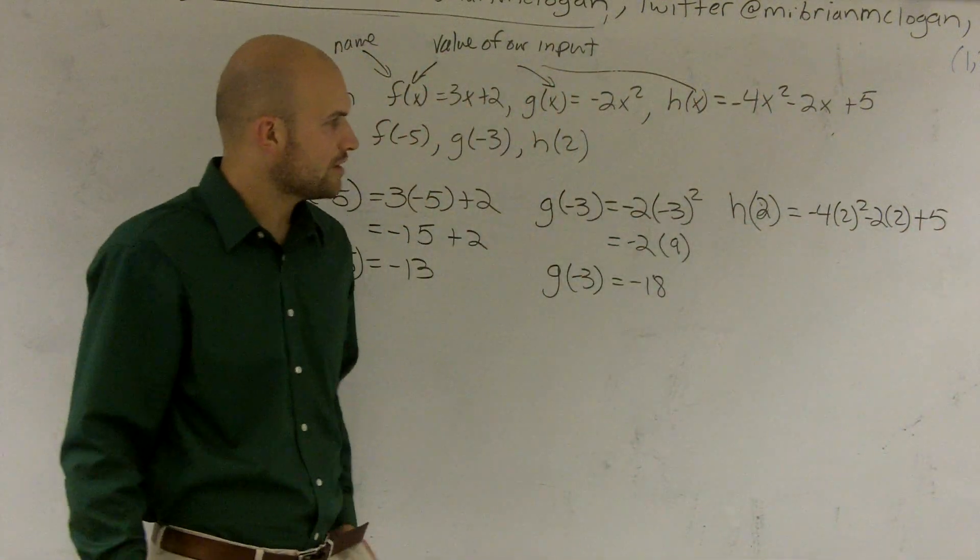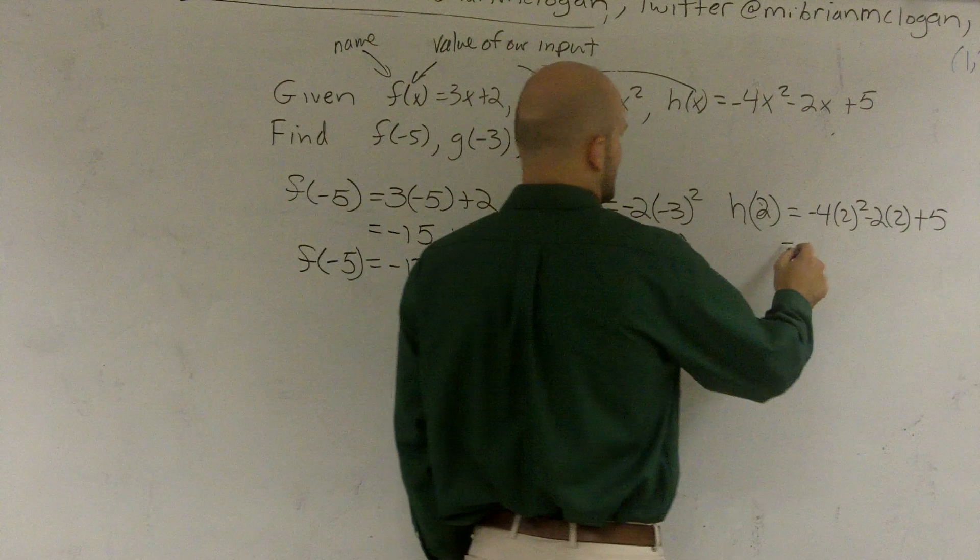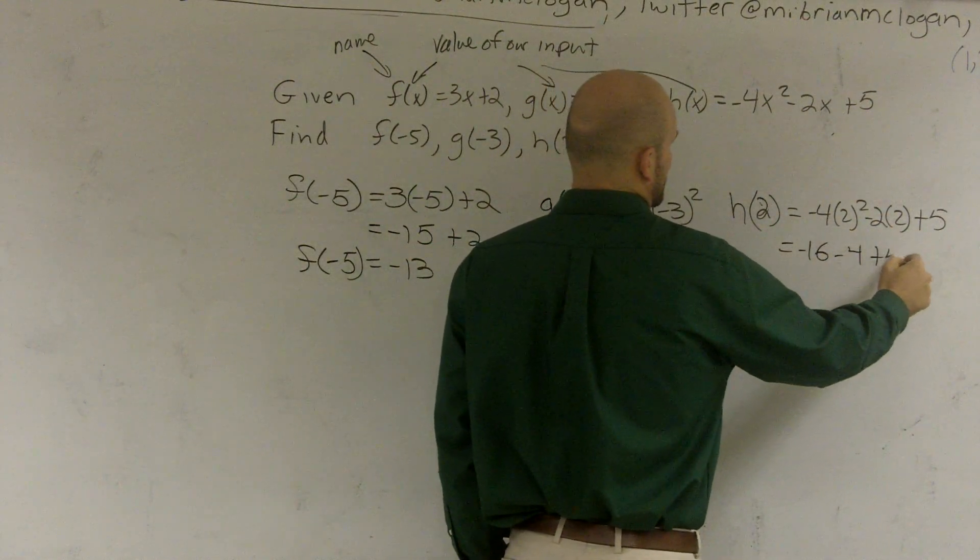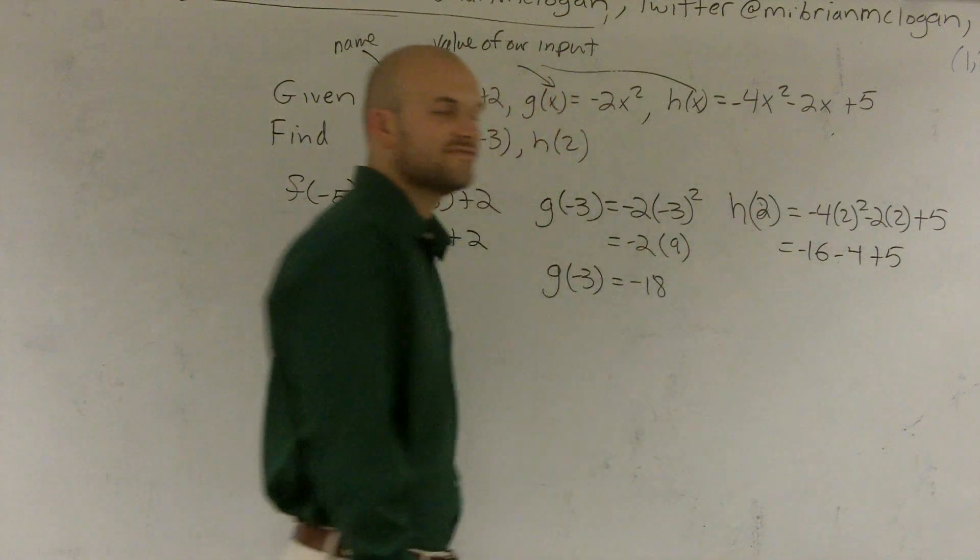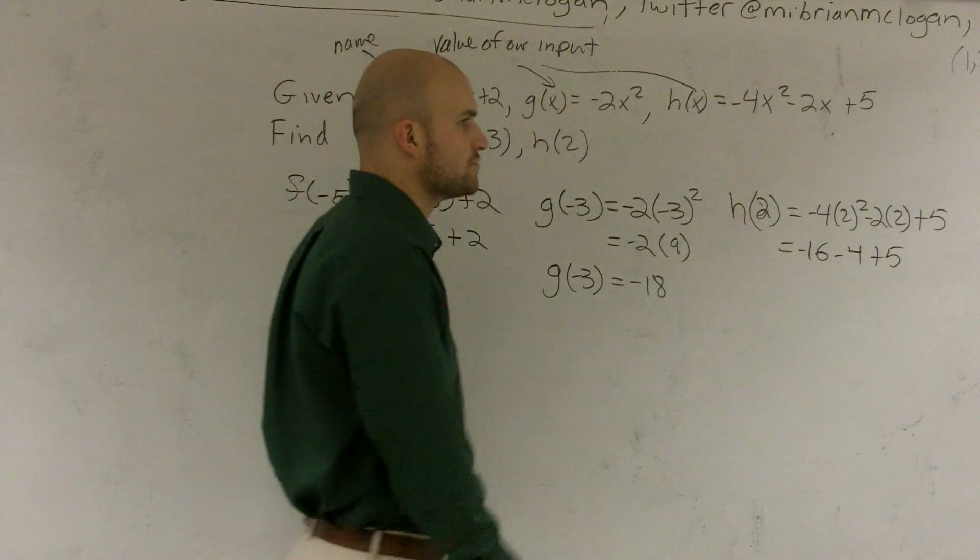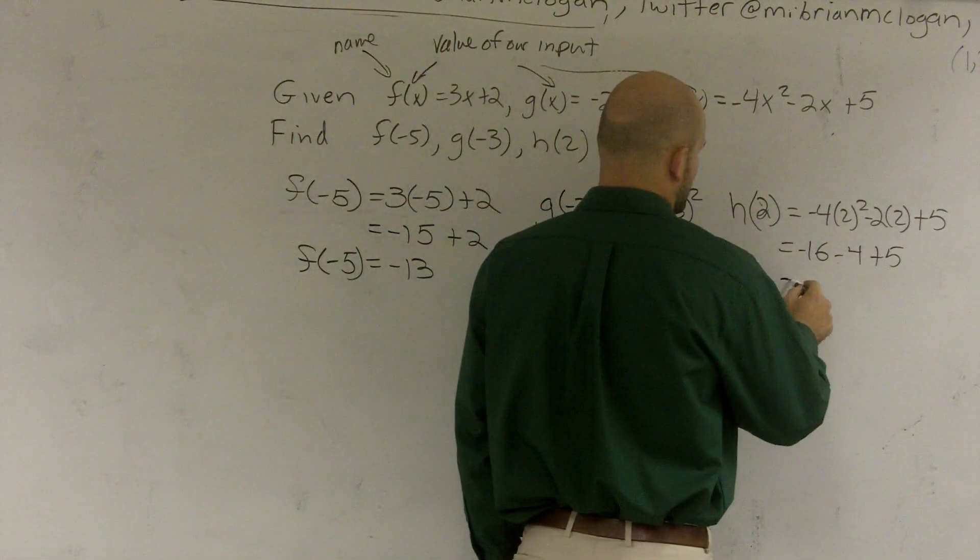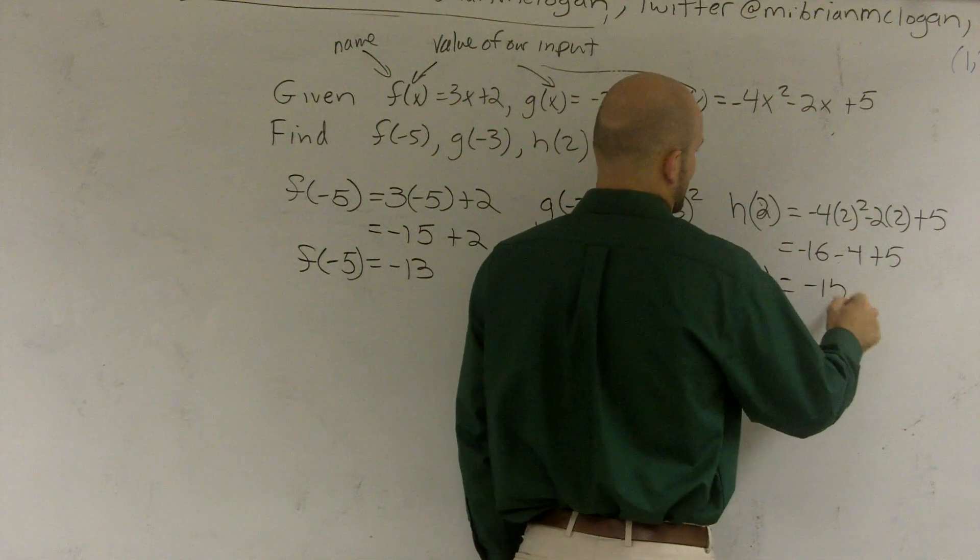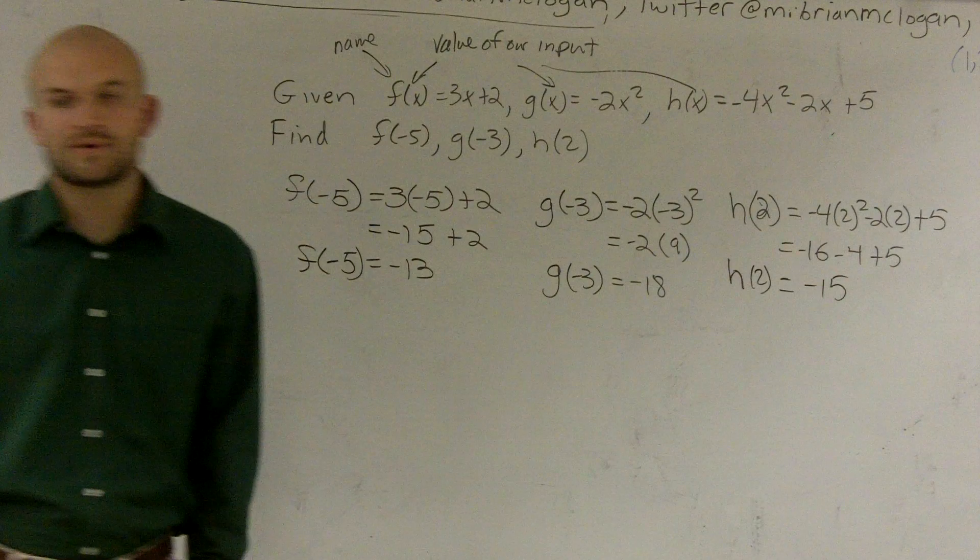Well, 2 squared is 4 times negative 4 is negative 16 minus 4 plus 5. Negative 16 minus 4 is negative 20 plus 5 is negative 15. So I can say h of 2 equals negative 15. And that's how you evaluate functions.